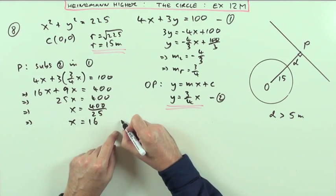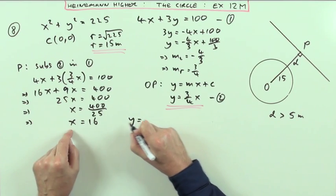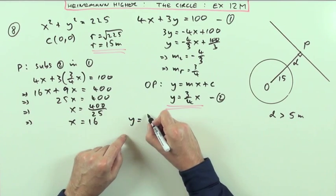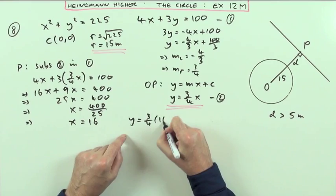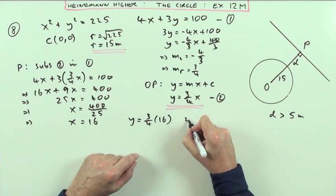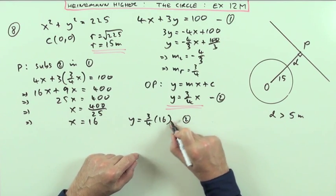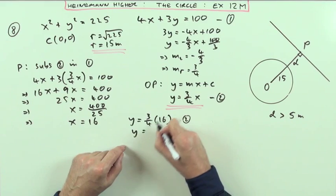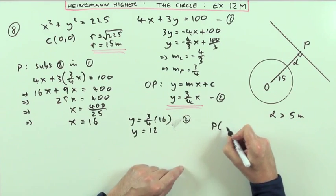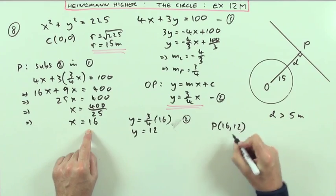Then I can find y simply by using this equation. Substitute that in 2: y is going to be 3/4 of 16, which means y is 12. So P is the point (16, 12).